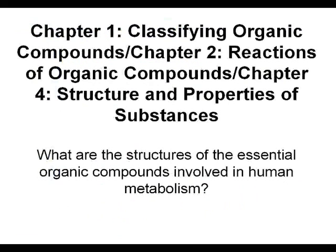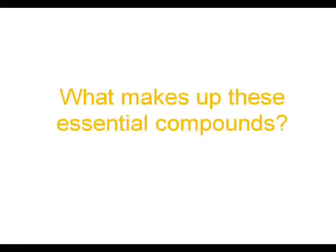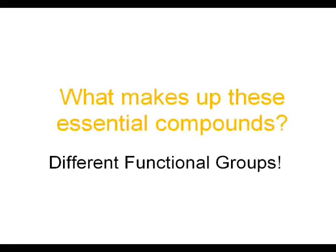This next connection studies the relationship between functional groups and the bonds in the essential organic compounds involved in human metabolism. Different functional groups make up these essential compounds. There are many different functional groups present in organic compounds, and we will be focusing on those present in the nutrients essential to metabolism — those are lipids, proteins, and carbohydrates.